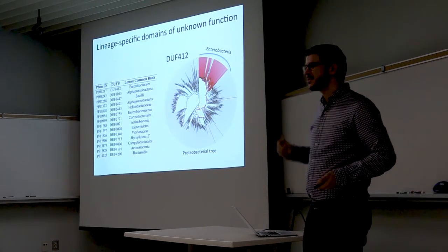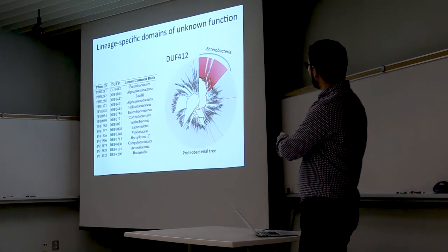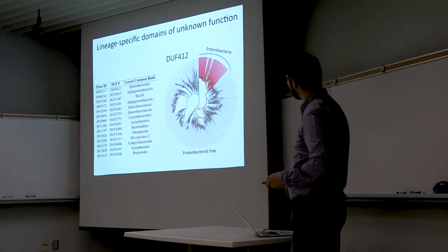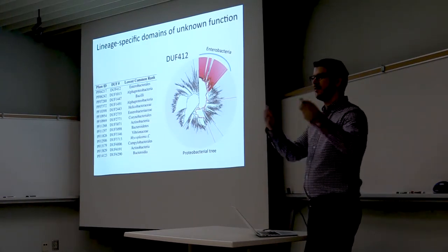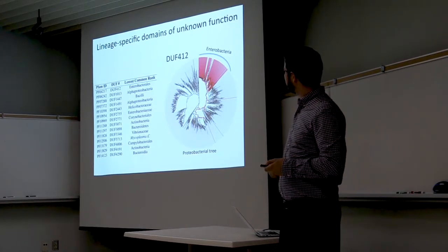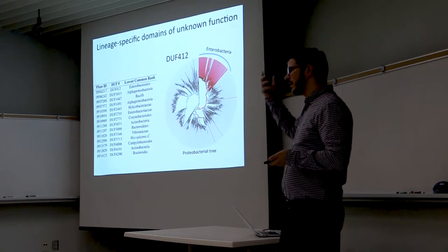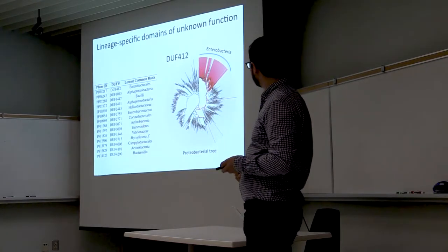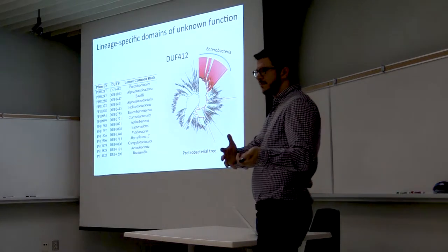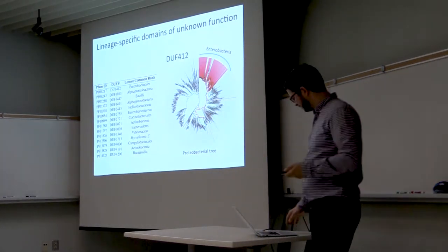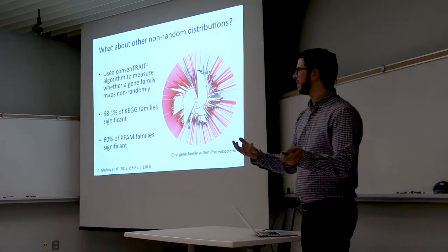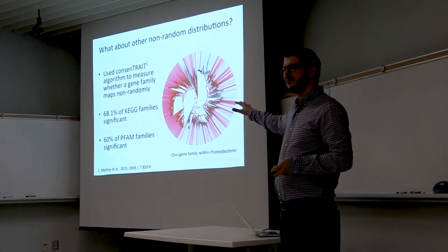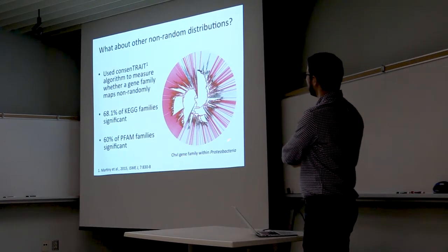We find many other interesting lineage-specific gene families, and a lot of them are domains of unknown function. For example, one is highly specific to enterobacteria. A whole suite of these domains of unknown function are actually lineage-specific genes that are essential — previous studies have shown that deleting them is lethal in bacteria — showing a correspondence between lineage specificity and essential gene families. However, these lineage-specific families are actually quite a rare phenomenon.